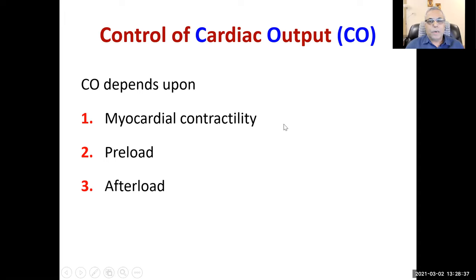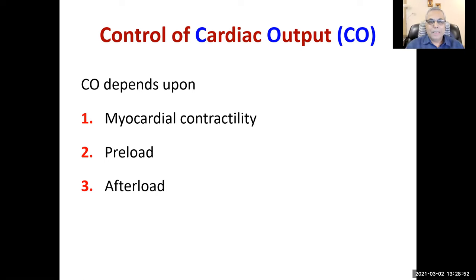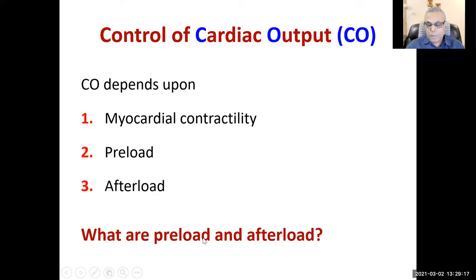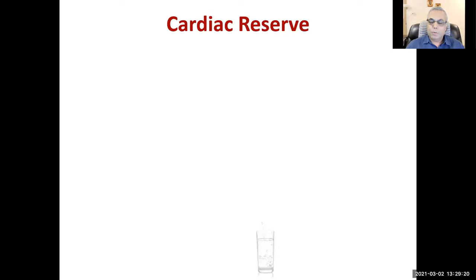Cardiac reserve equals maximum cardiac output during vigorous exercise minus cardiac output at rest. In heart failure, the cardiac reserve is markedly diminished. Initially the patient has no symptoms at rest, but later stages bring signs and symptoms. Three things control cardiac output: myocardial contractility — the greater the force of contraction, the more blood is ejected — plus preload and afterload, which I will explain next.